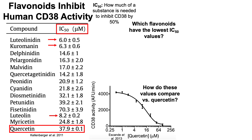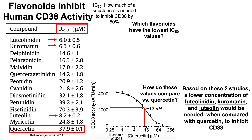Another study looked at CD38 activity versus quercetin concentration, and found that the IC50 for quercetin's ability to inhibit CD38 was significantly lower — about 13 micromolar. Nonetheless, each of those three flavonoids — luteolinidin, curomanin, and luteolin — had IC50 values lower than 13 micromolar. So based on these two studies, a lower concentration of these three flavonoids is needed compared with quercetin to inhibit CD38.